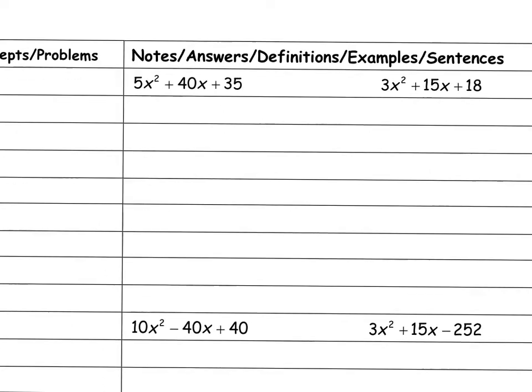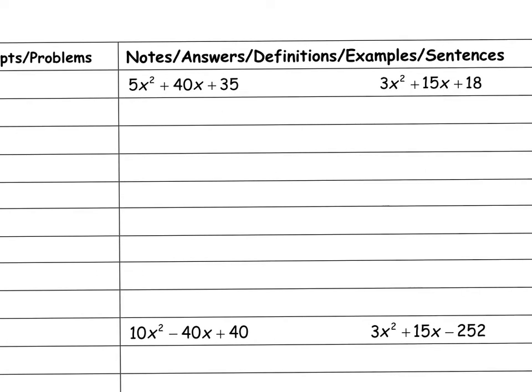So the first thing I'm going to look at is my coefficients. My coefficient here is 5, 40, and 35. They're all divisible by 5, so the first thing I'm going to do is factor out a 5. So if I take a 5 out, what is my greatest common factor? It's 5. So that leaves me with x squared plus 8x plus 7.